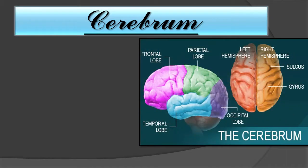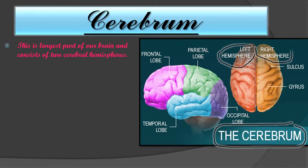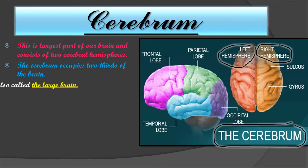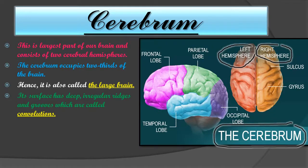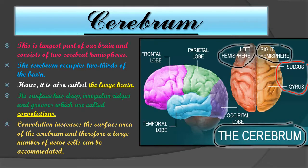The cerebrum has different lobes — frontal lobe and others — and is the largest part of our brain. It consists of two cerebral hemispheres: the left hemisphere and right hemisphere, joined by nerve fibers and tracts. The cerebrum occupies two-thirds of the brain and is also called the large brain. Its surface has deep convolutions — irregular ridges and grooves — called sulcus and gyrus, which increase the surface area so that a large number of nerve cells can be accommodated.